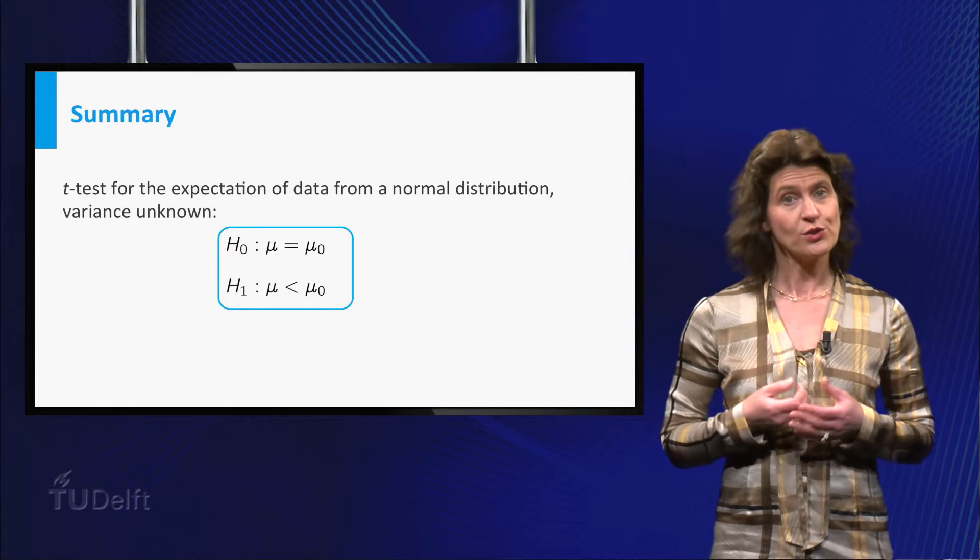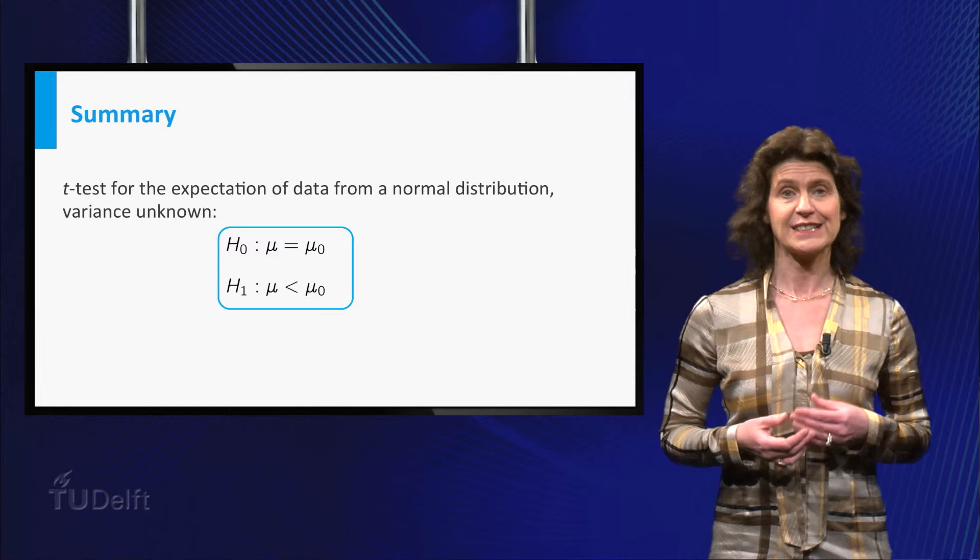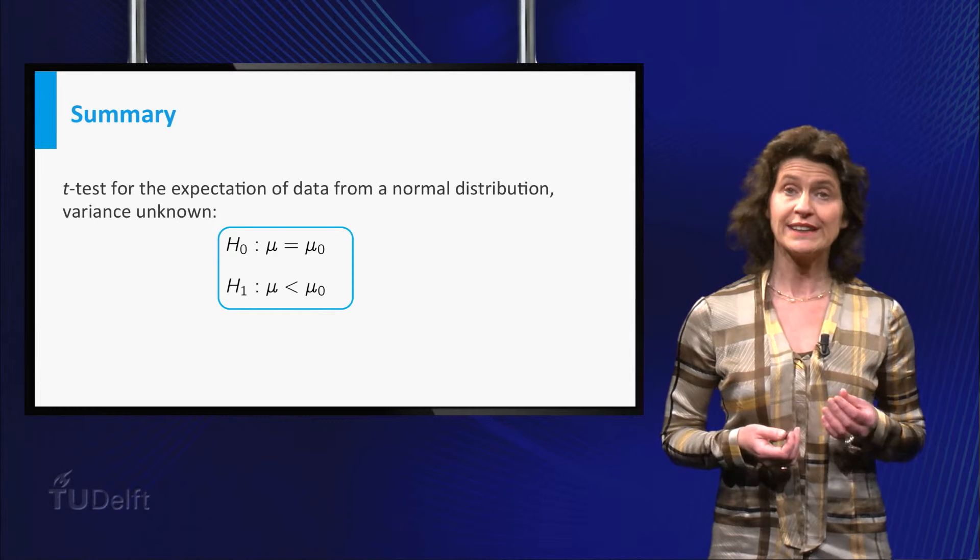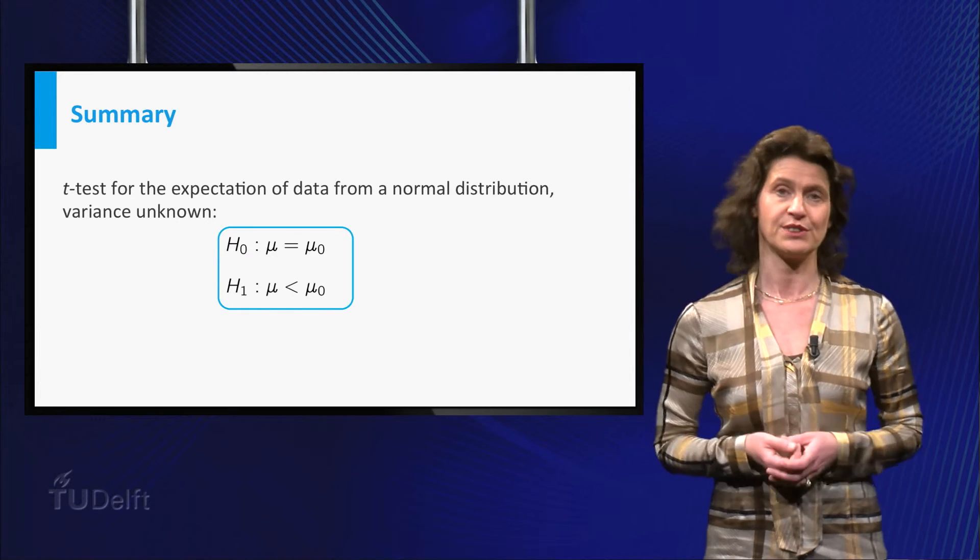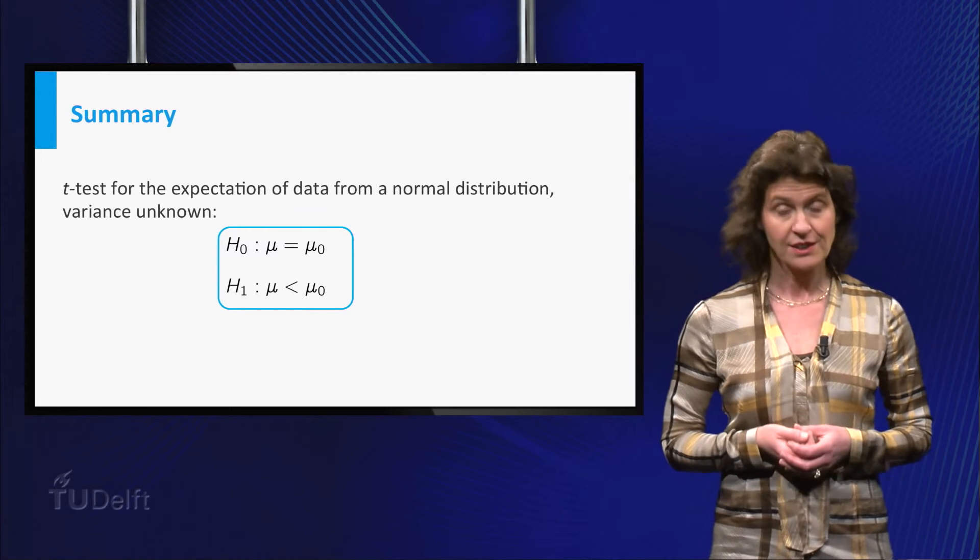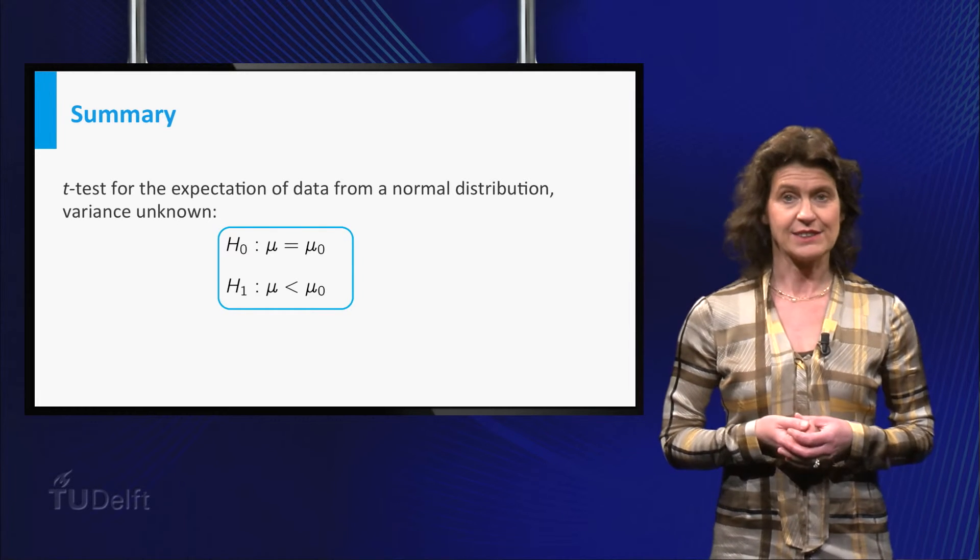So you learned that if you want to test hypotheses comparing an expectation to an a priori given value in the case of normally distributed data with unknown variance, you can use the t-test to do this.